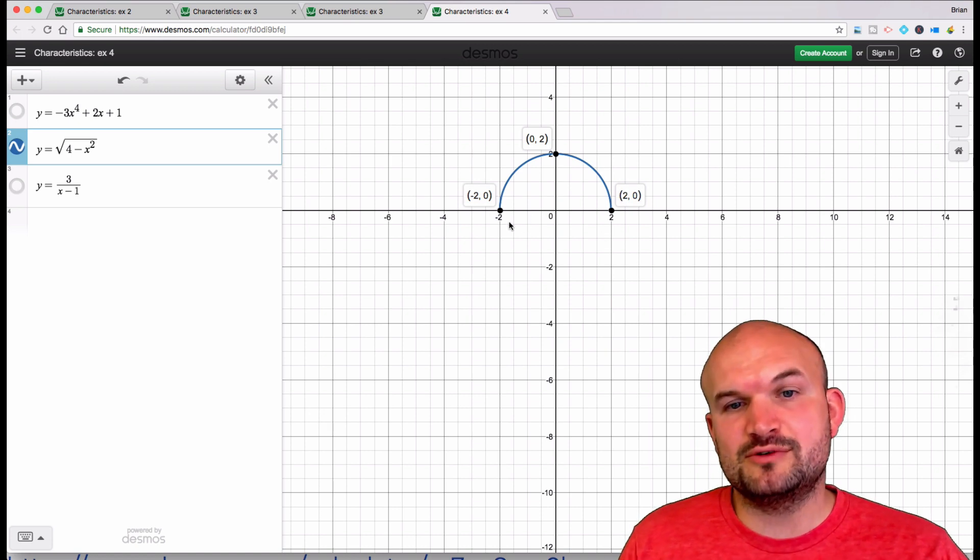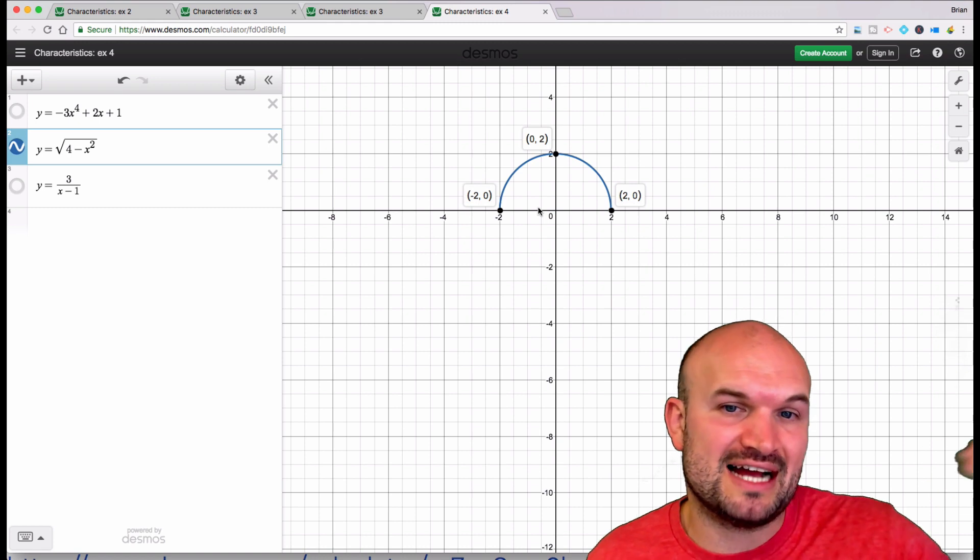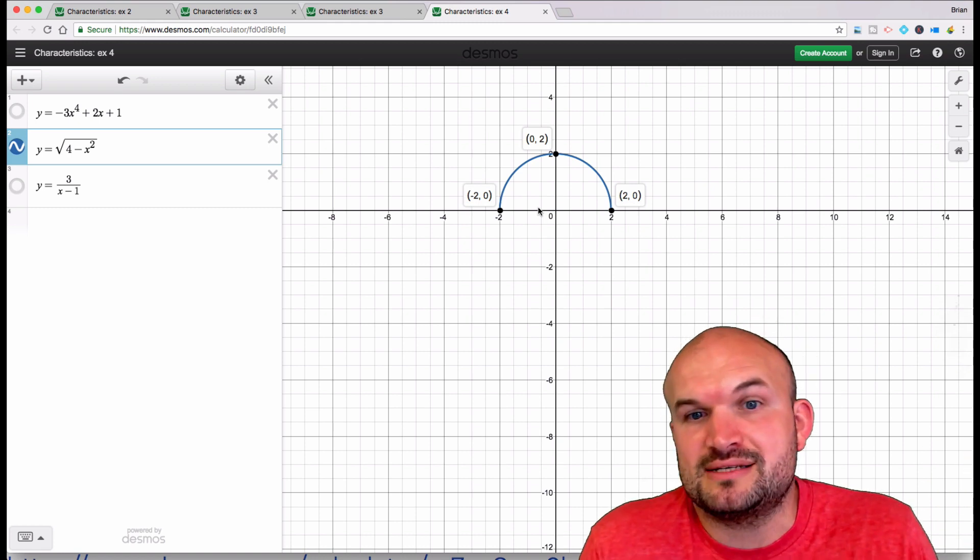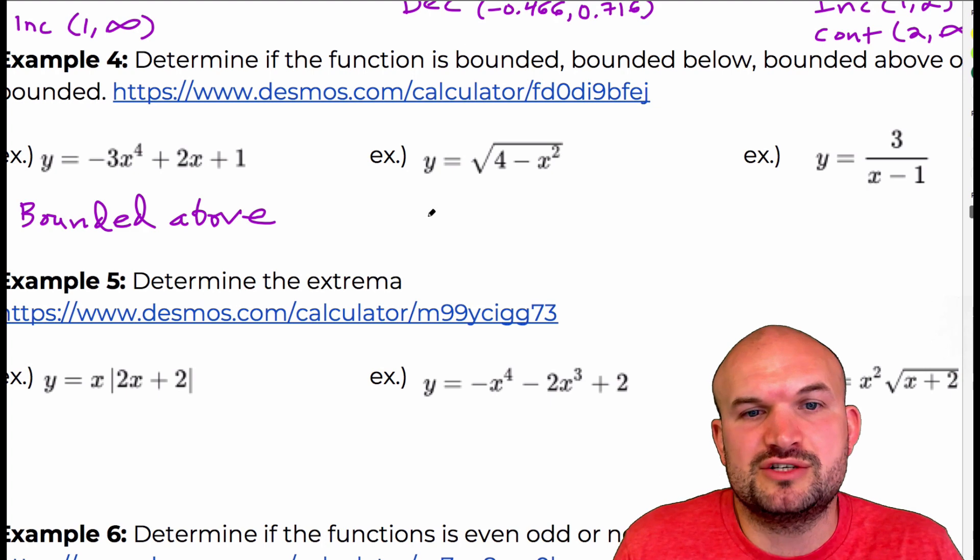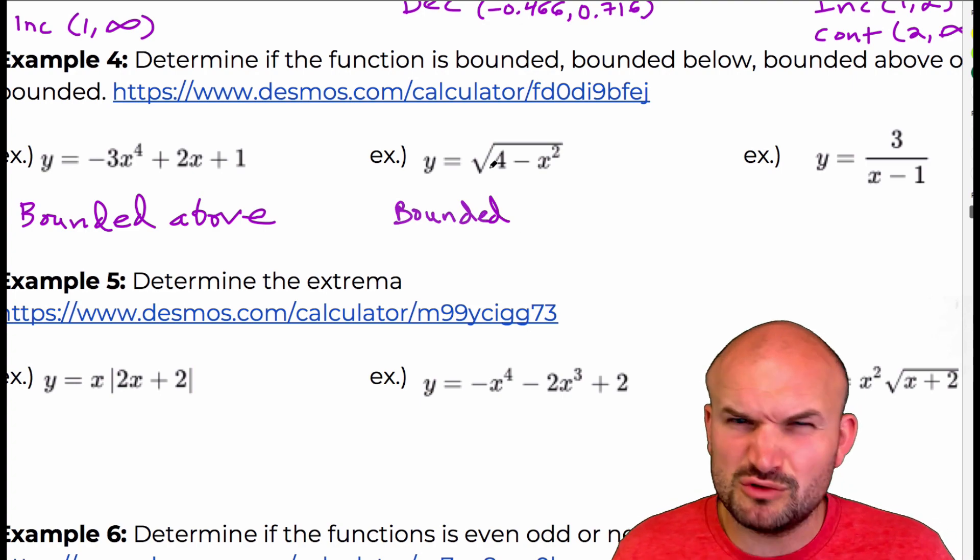So my absolute minimum value occurs at y equals 0, my max is at 2, but again, since we have a max and a min, you can see the graph does not go above those max and mins. So therefore, this equation would be called bounded, because it's bounded above and it's bounded below.